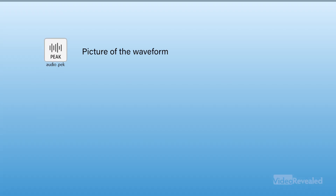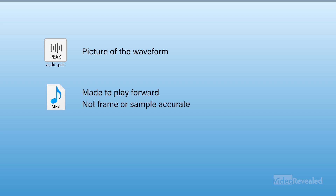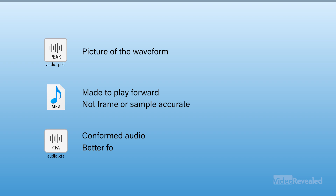So we know a PEAK file is a picture of a waveform. What's a CFA file? When you bring in something like an MP3, they're really made just to play forward — they are not frame or sample accurate. So Premiere Pro creates a CFA file, which stands for conformed audio. This is a much better format for editing.